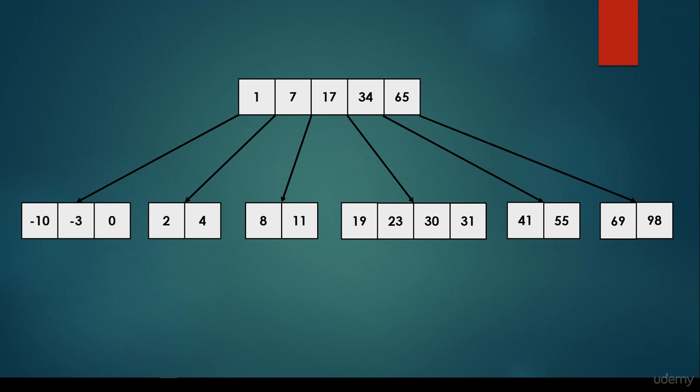Basically, it is very similar to what we have seen for binary search trees, AVL trees, or red-black trees, but we have to consider the fact that here we have several items and several keys in a single node.